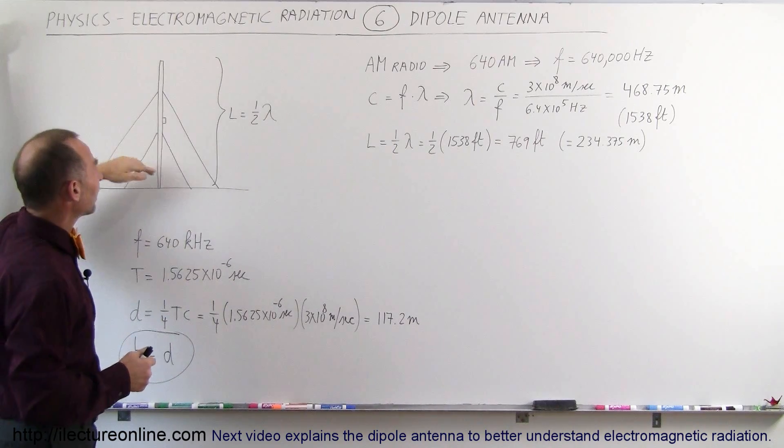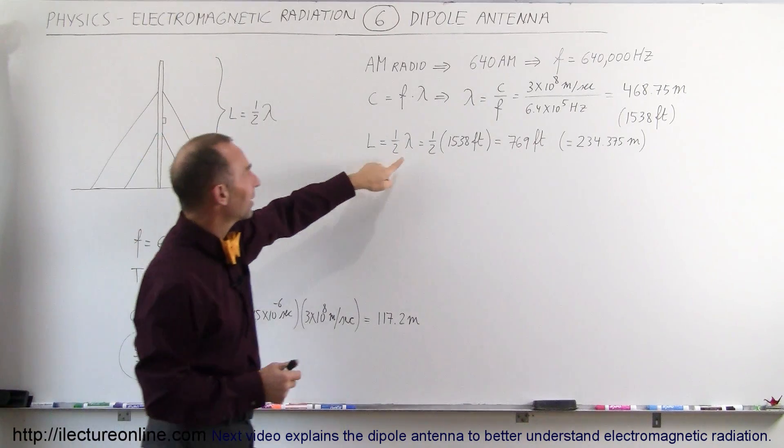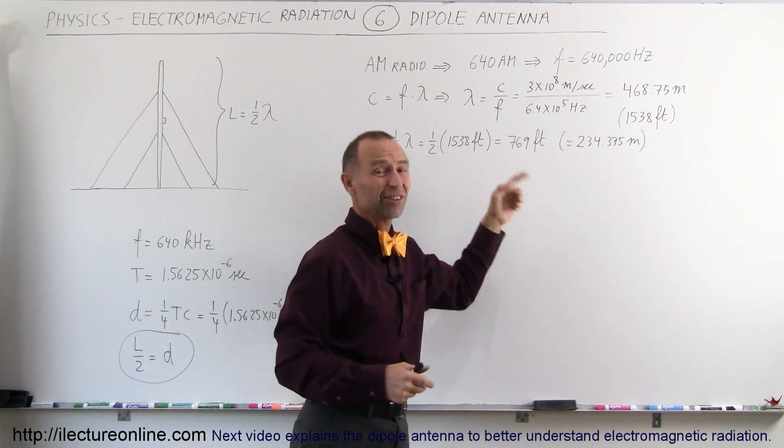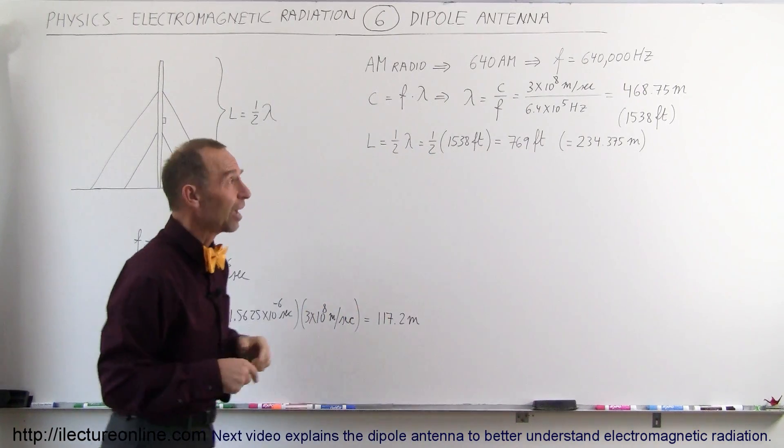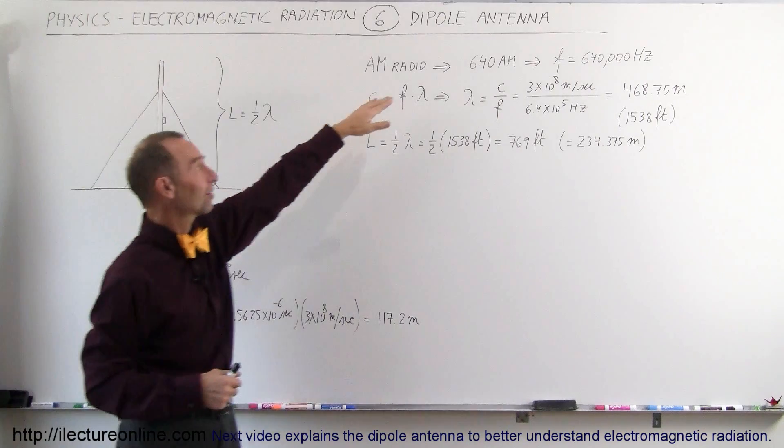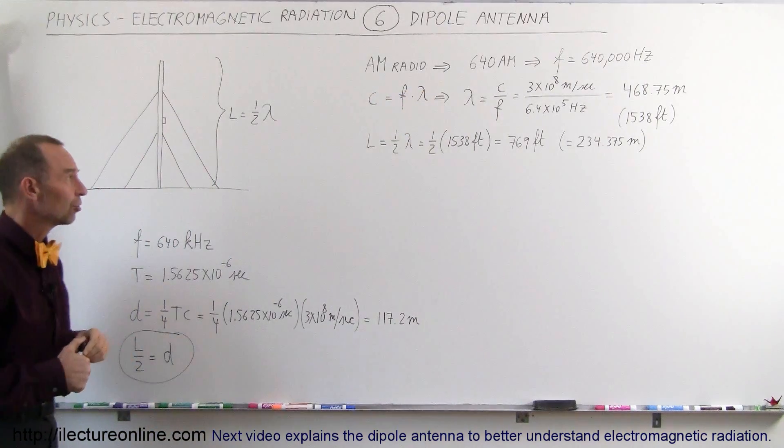And so, if you're going to do that, that means that the length must be half the wavelength. Half the wavelength would be 234 meters or 769 feet. So, that's a pretty tall tower necessary to broadcast this particular frequency for that particular radio station.